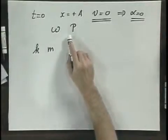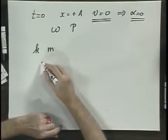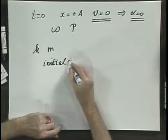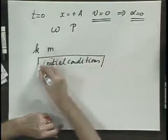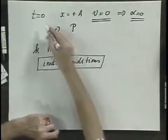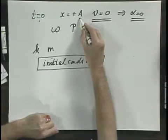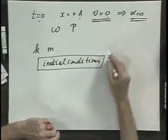What is the meaning of A and alpha? Well, A and alpha is what we call the initial conditions. I discussed one initial condition: if you define t equals zero such that the object is at x equals plus A and you release it with zero speed, then out comes alpha.